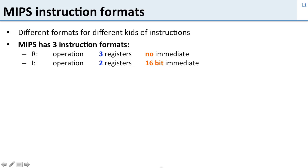Then you have the I format or the I for immediate instruction, and this makes a trade-off. It gives us an operation, but instead of having three registers we now just have two. But instead of having no immediate, we now have a 16-bit immediate. So we've traded off some of our register space for some immediate space.